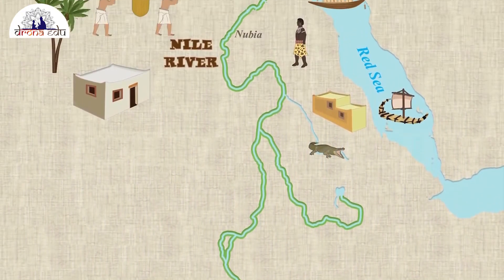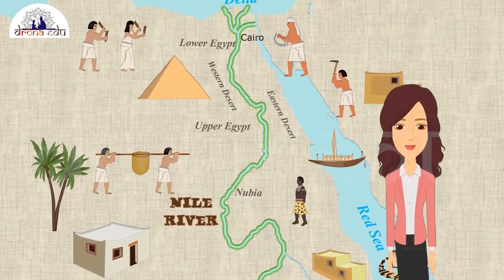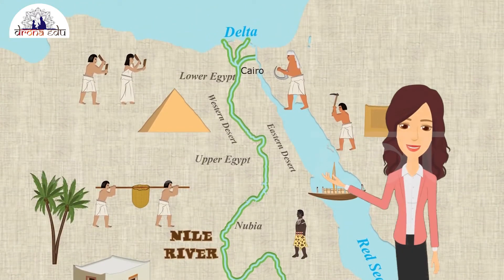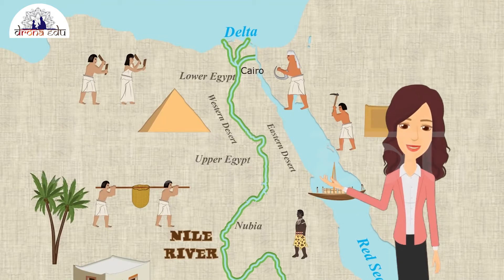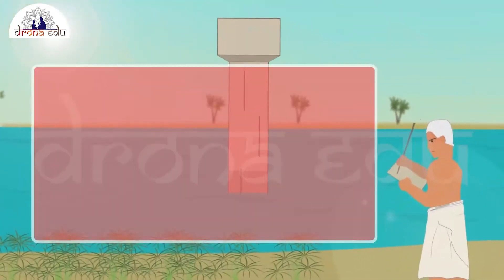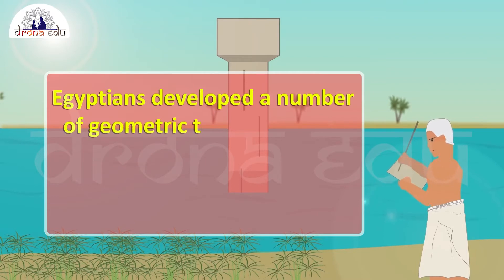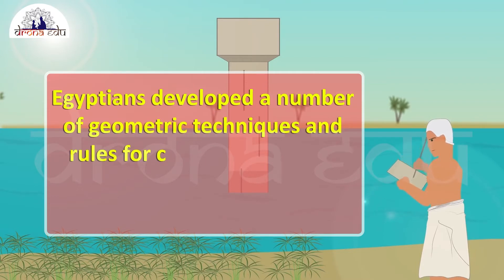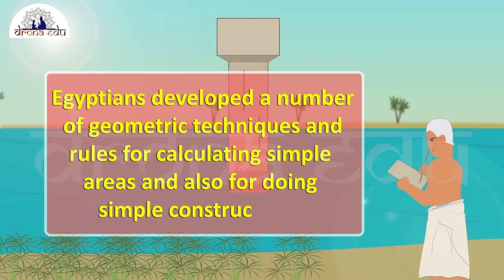For example, whenever the river Nile overflowed, it wiped out the boundaries between the adjoining fields of different landowners. So after such flooding, these boundaries had to be redrawn. For this purpose, the Egyptians developed a number of geometric techniques and rules for calculating simple areas and doing simple constructions.